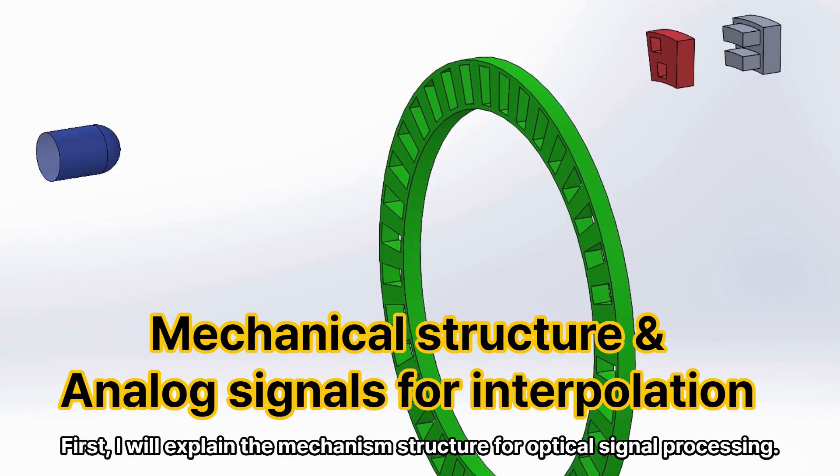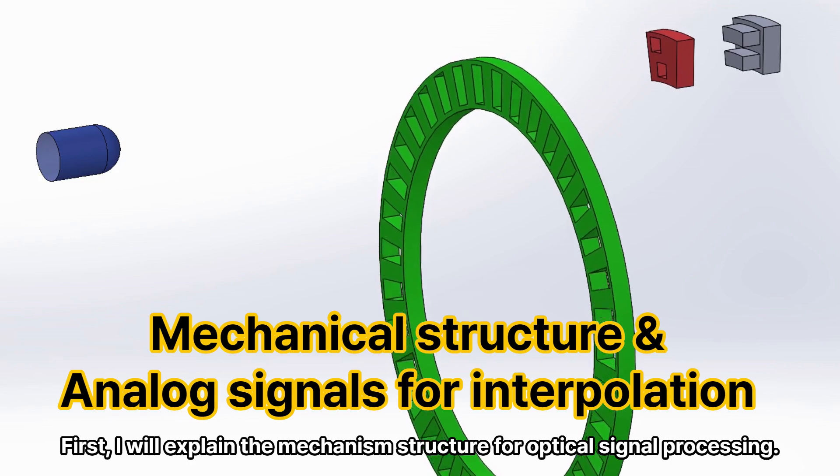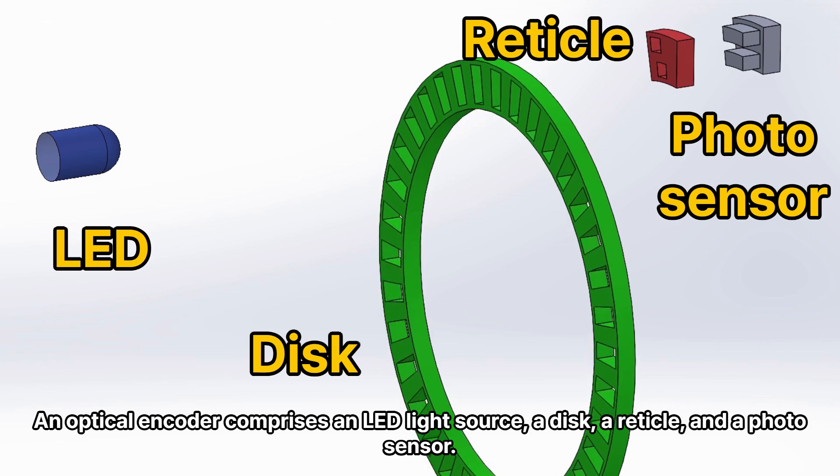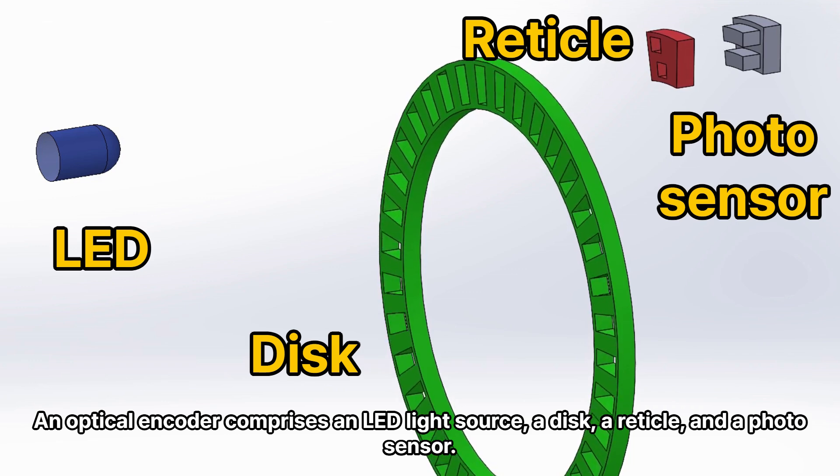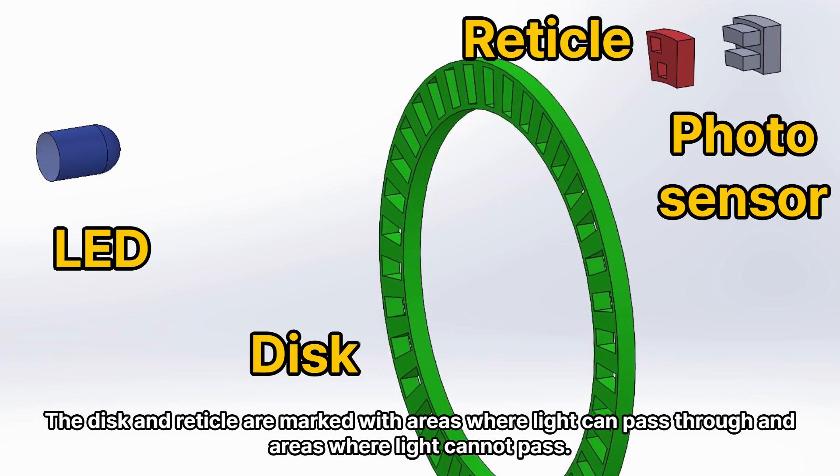First, I will explain the mechanism structure for optical signal processing. An optical encoder comprises an LED light source, a disk, a reticle, and a photosensor. The disk and reticle are marked with areas where light can pass through and areas where light cannot pass.